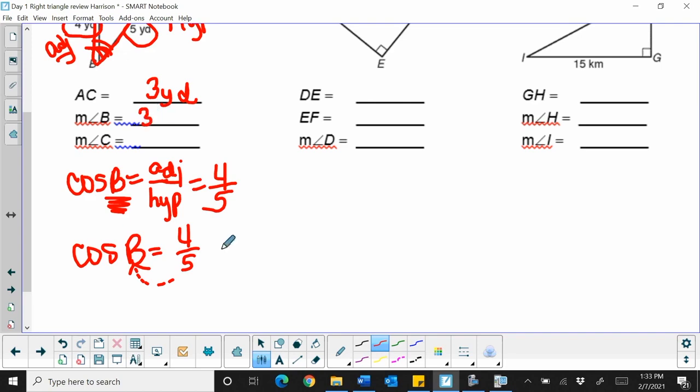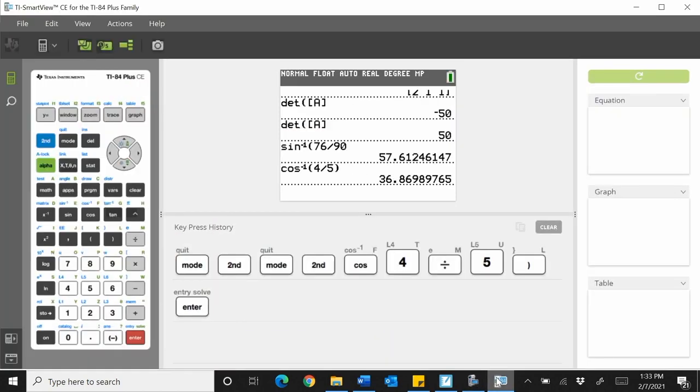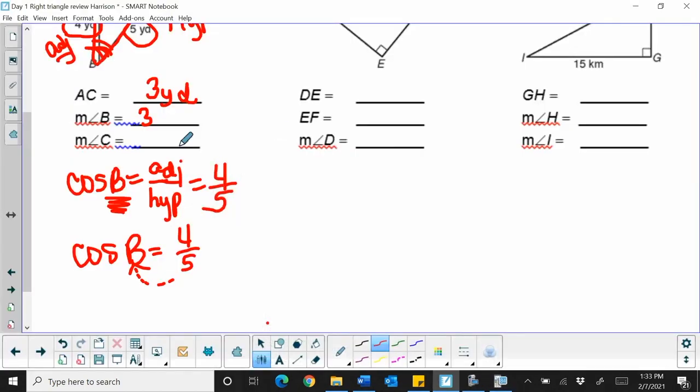So that's going to be 30, was it 38, 36.9. And that is angle B.